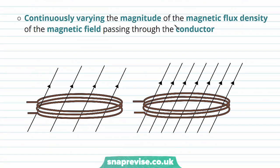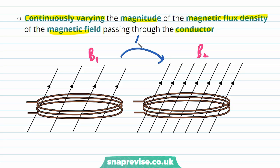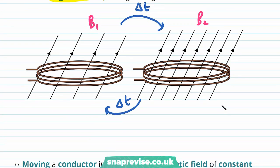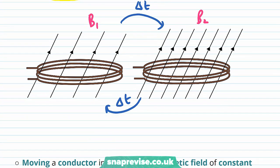Another way to induce an EMF is by continuously varying the magnitude of the magnetic flux density of the magnetic field passing through the conductor. For example, we have two different flux densities, B1 and B2. Over time, it's going to change between these two flux densities, so changing between the flux linkage being equal to B1 times the area of the coil A times the number of turns N, and therefore over time the magnetic flux linkage is changing.